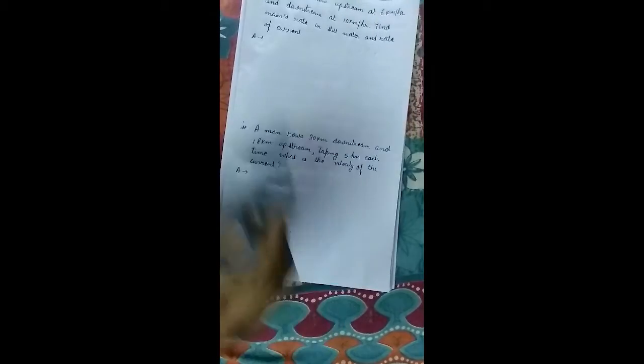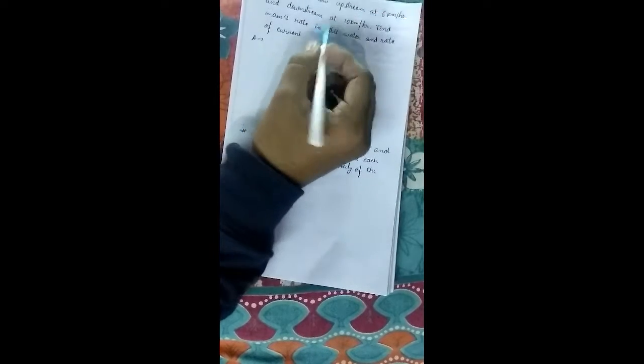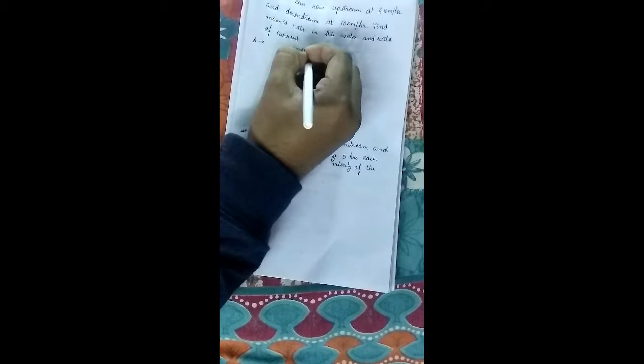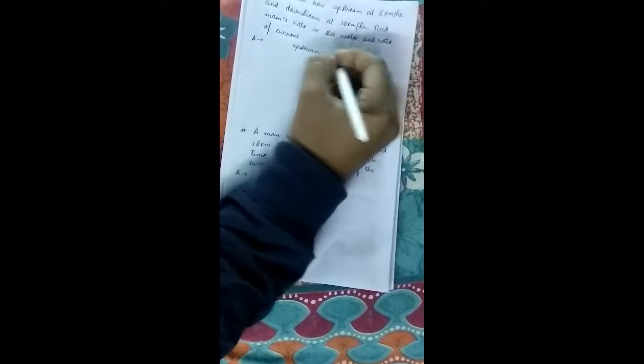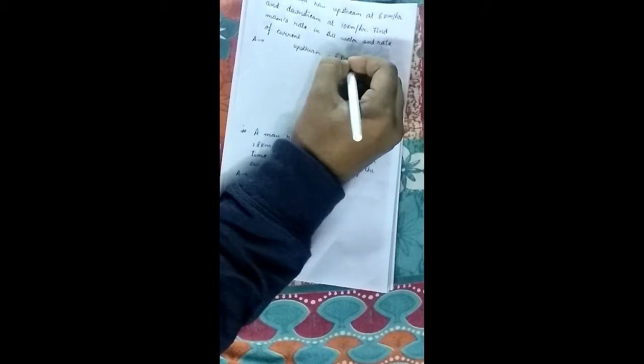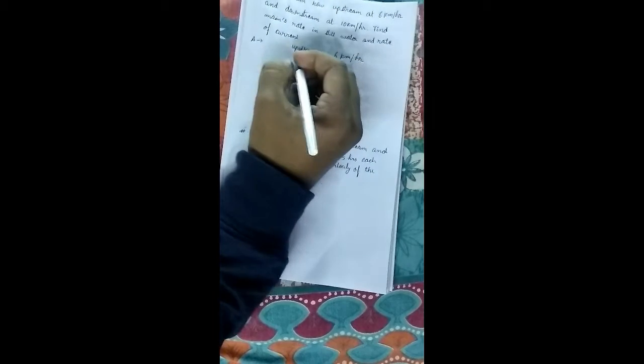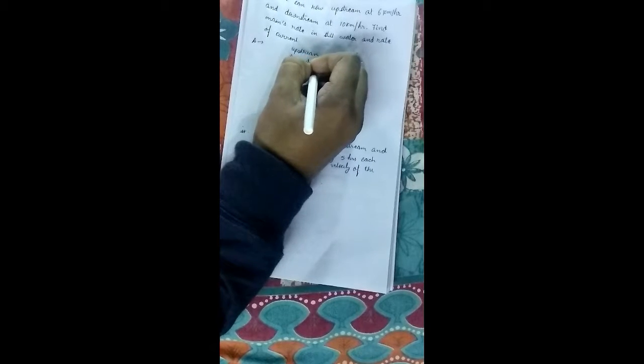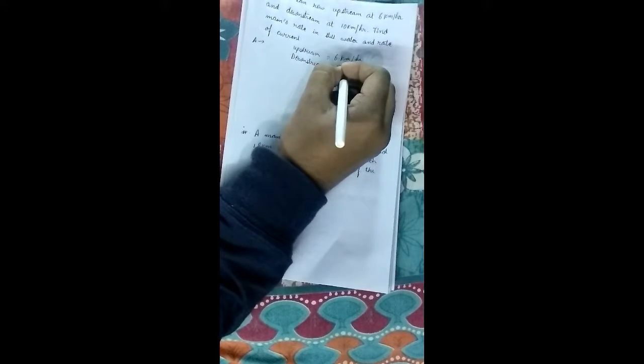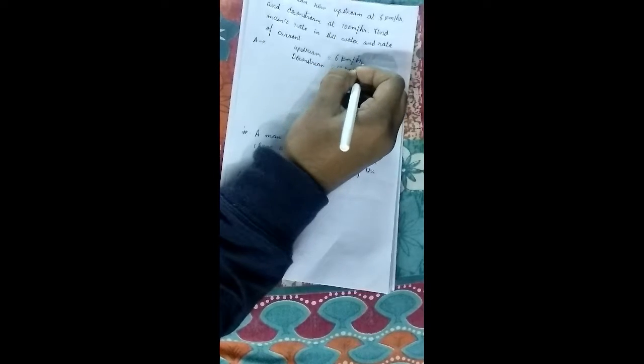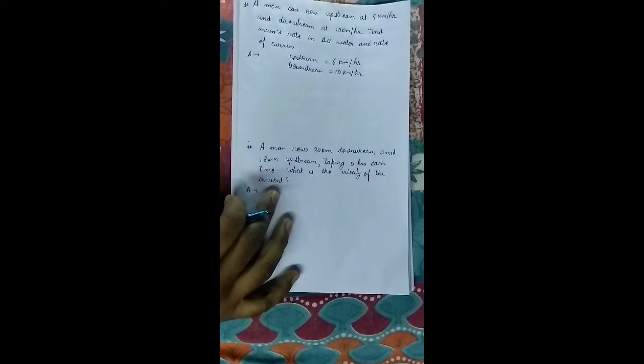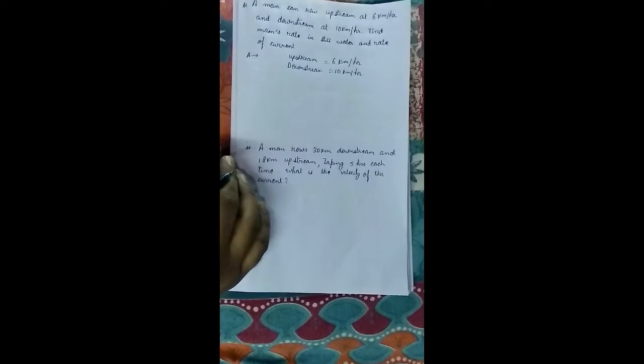First of all we know that speed of upstream is 6 km per hour and downstream 10 km per hour. From the previous video we know that the rate in still water will be